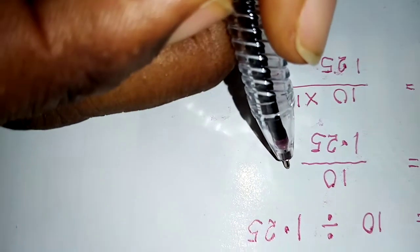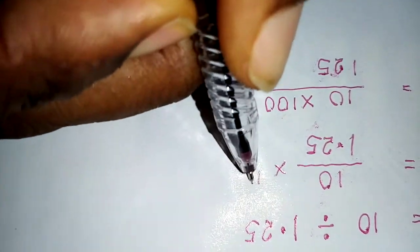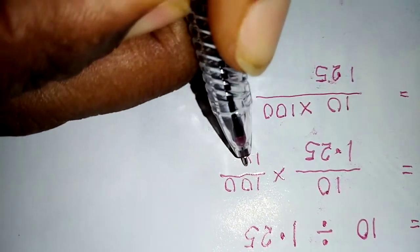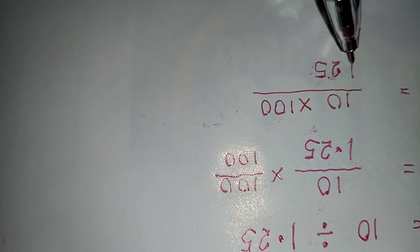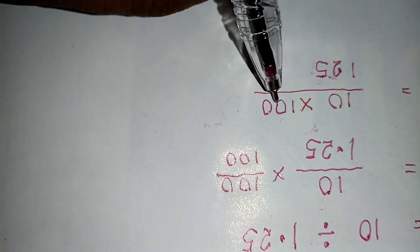So because this is the same thing as times 100 over 100. So 1.25 times 100 will be 125. So 10 times 100 is 1000.